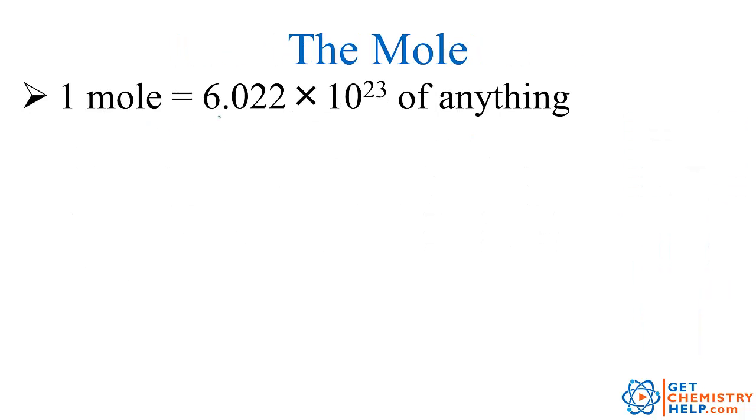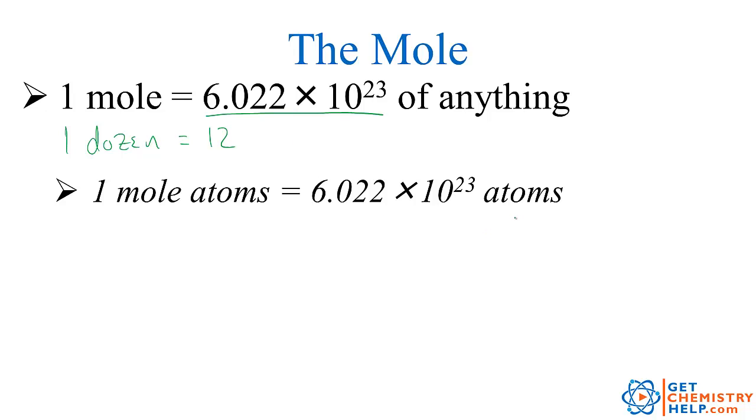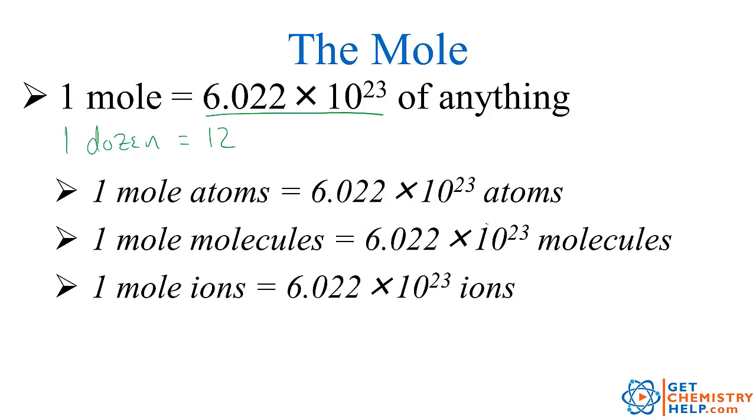Now again, one mole is 6.022 times 10 to the 23rd of whatever it is you're dealing with. Just like one dozen is 12 of anything you're dealing with, one mole is Avogadro's number of anything. So it could be atoms, it could be molecules, it could be ions or formula units or electrons or protons, whatever you want, but it could be anything. It could be doughnuts or puppies or TVs or cars or anything. It doesn't matter. So one mole of any kind of a substance has Avogadro's number of particles in it.